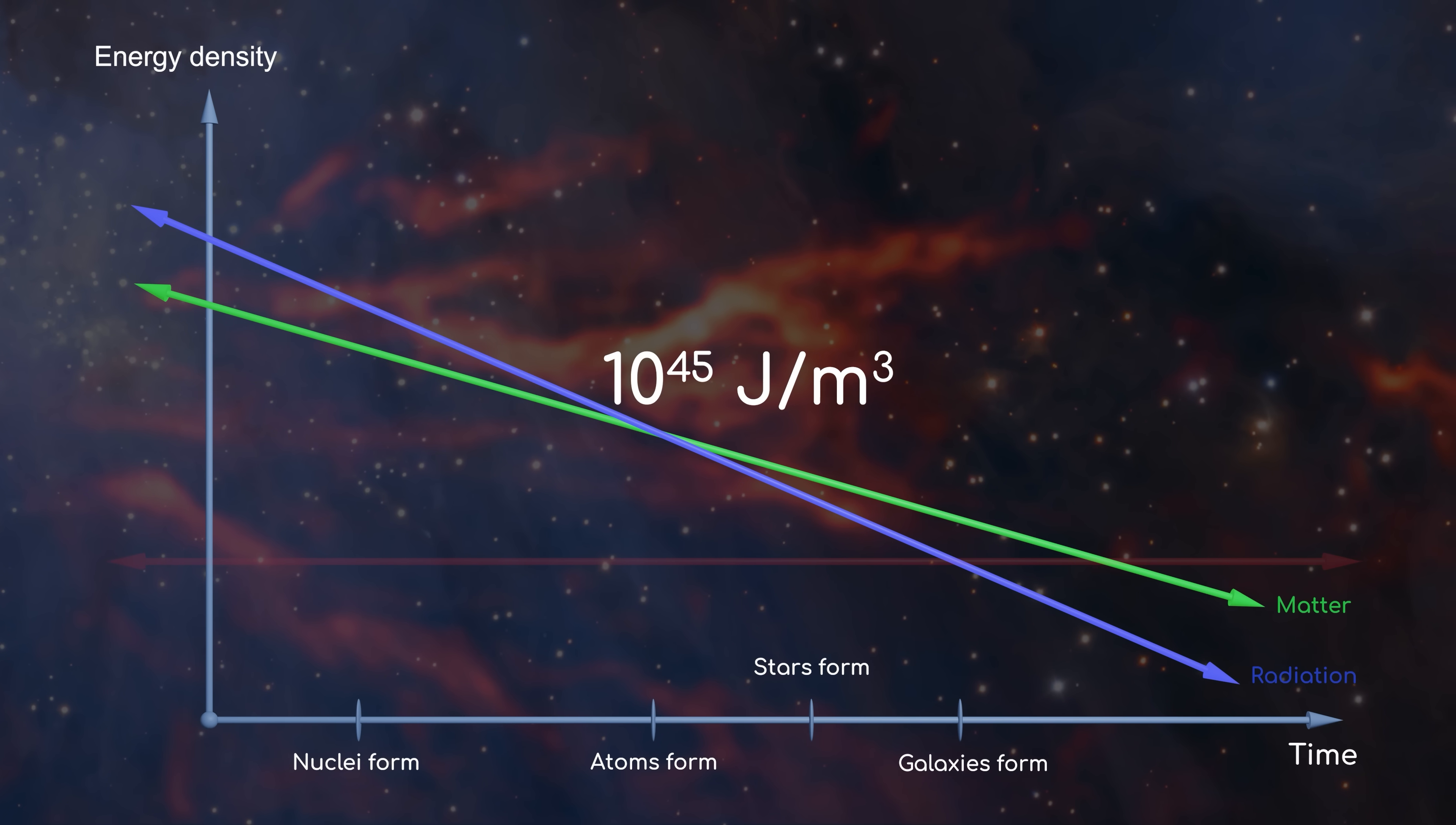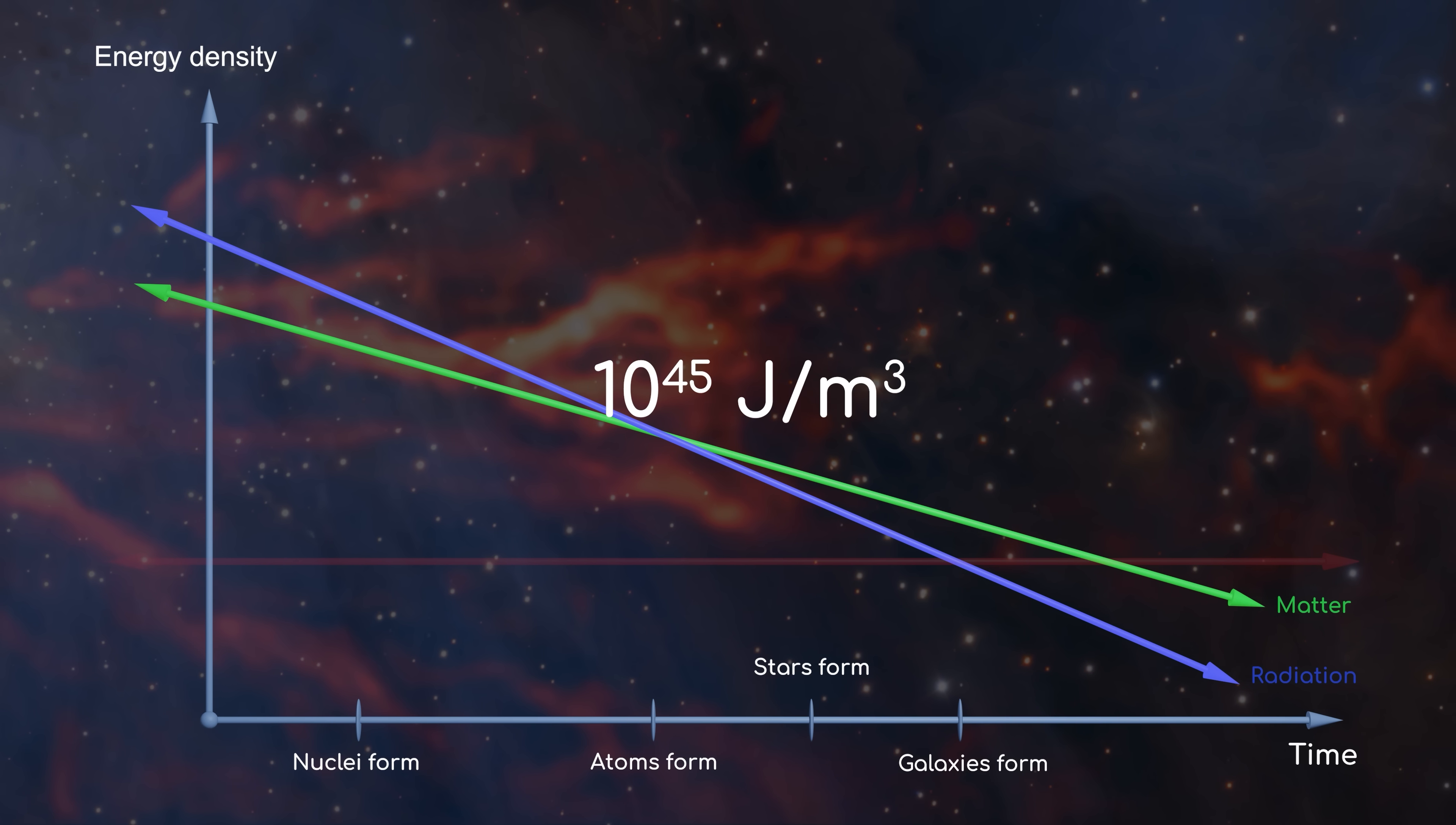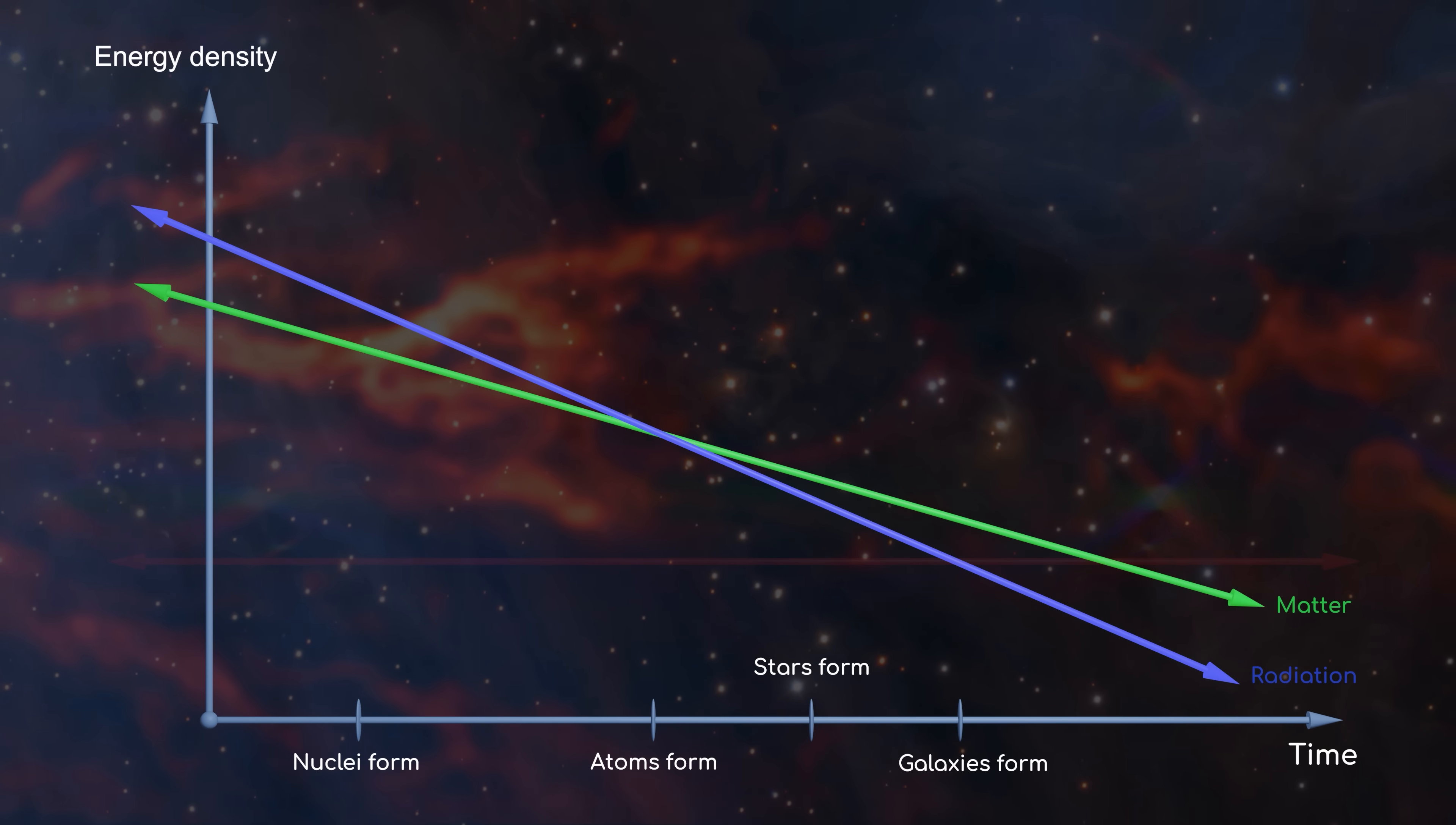So, where does the predicted energy density of 10 to the power 45 joules per cubic meter fall on this graph? It's quite literally off the charts.